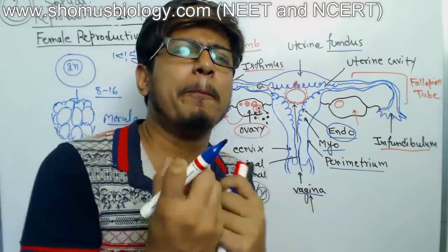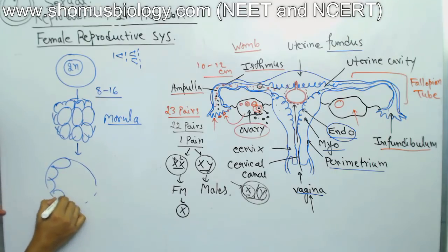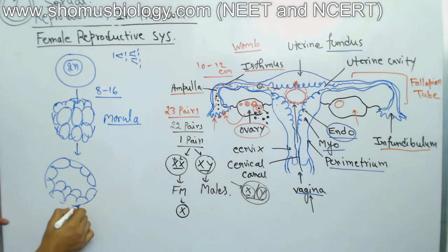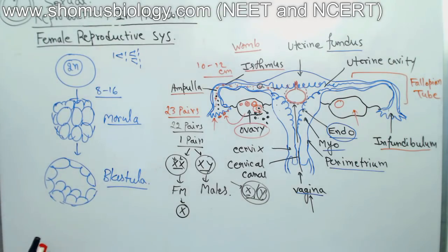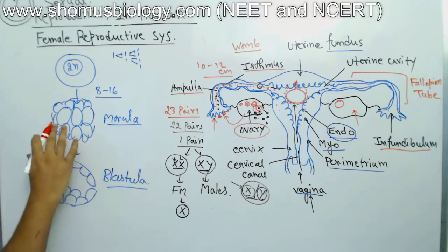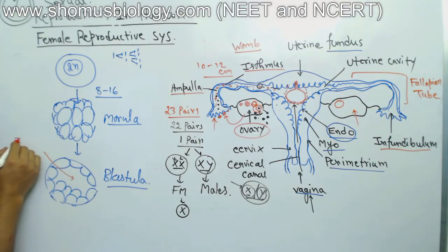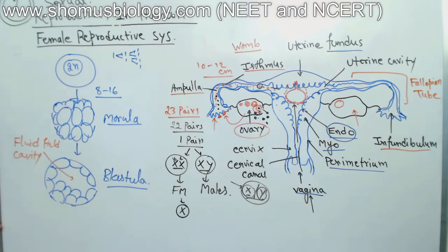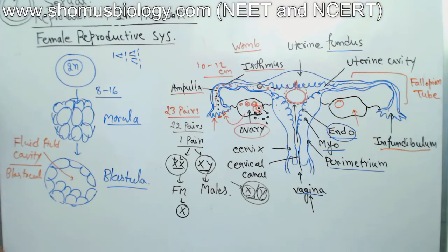The morula is not hollow — it is compact and tight. The cells slowly start to arrange toward the surroundings, creating a central pore in the middle. This state is known as the blastula. Compared to the morula, which has no central cavity, the blastula has a fluid-filled central cavity known as the blastocoel.